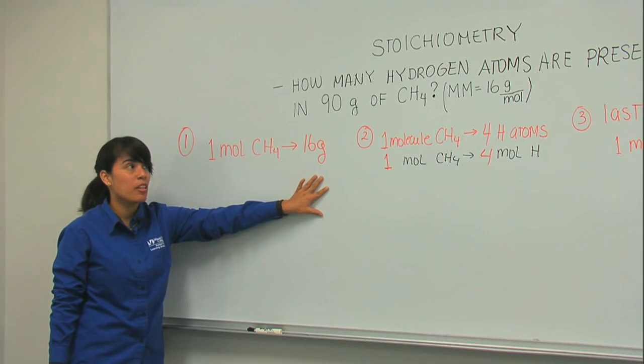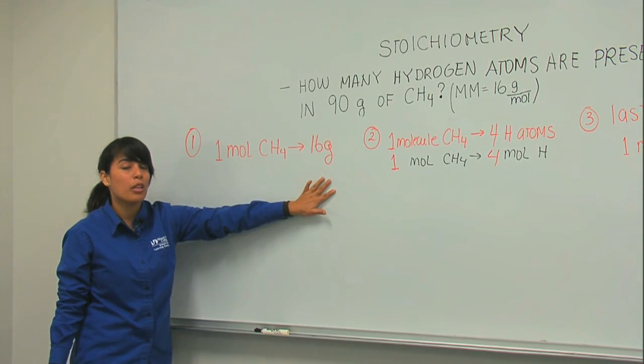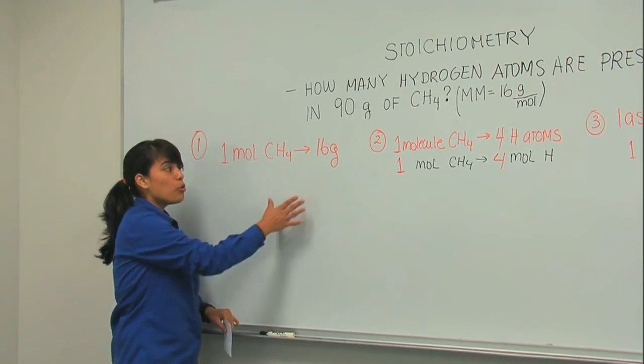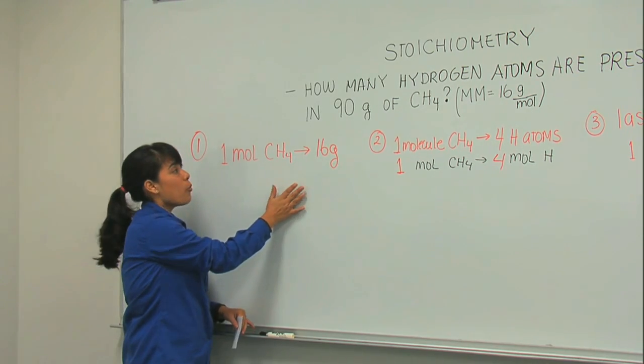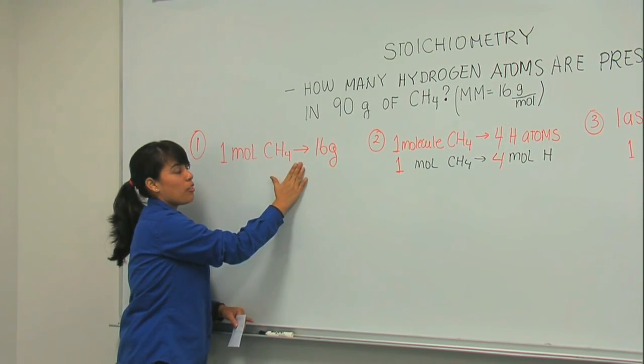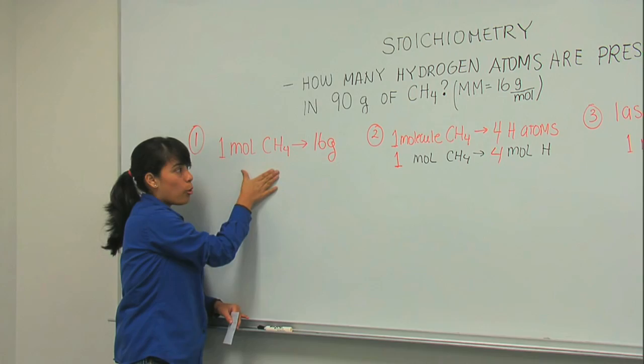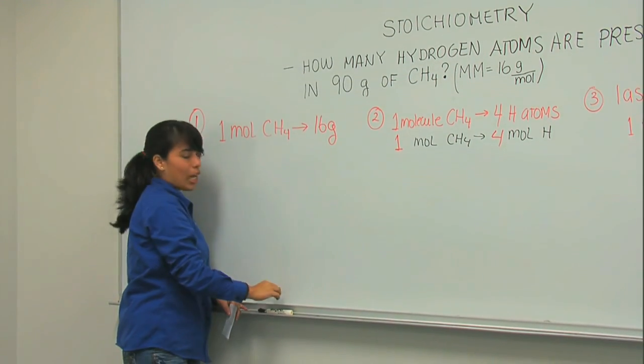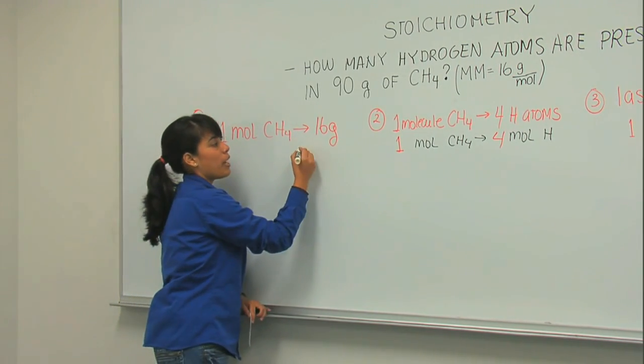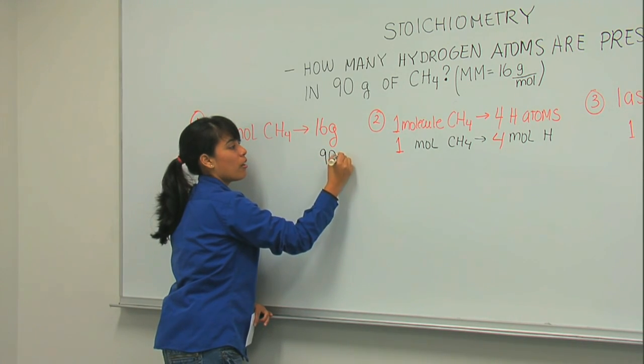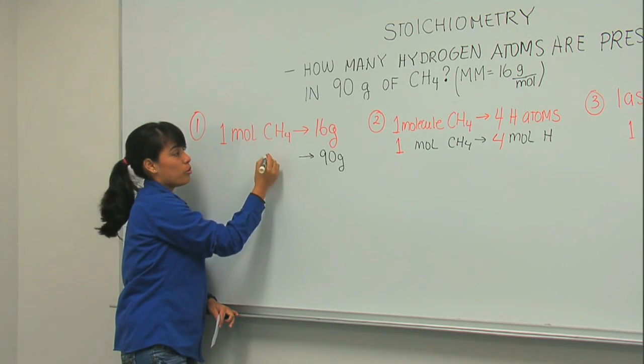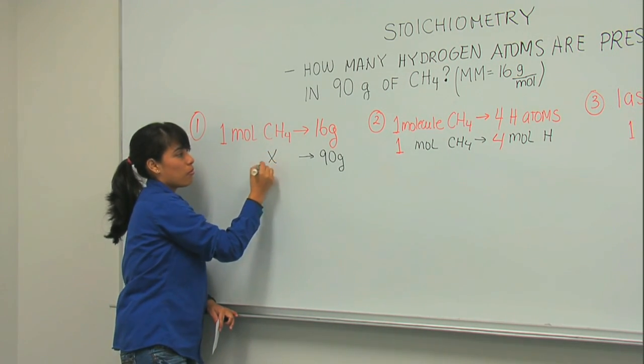Now, the problem is not giving me 16 grams. The problem is asking me for the number of atoms, hydrogen atoms, present in 90 grams. So I'm going to use a method called the proportion method. What I need to do is, once I write down what I know, I need to establish an order. I'm going to write moles on the left and grams on the right. And I'm going to put the value they're giving me in the problem. They're telling me that I have 90 grams. So I'm going to write 90 grams here. And of course, I don't know the number of moles that are equivalent to these 90 grams. So I do an x.